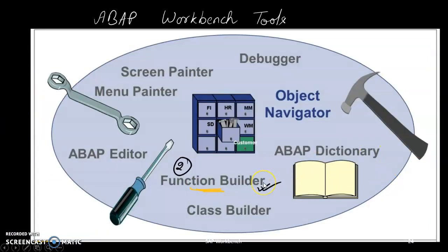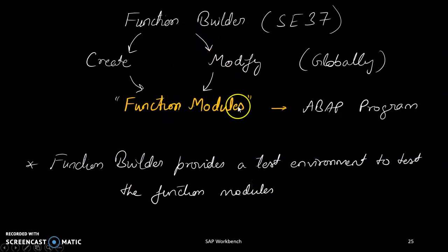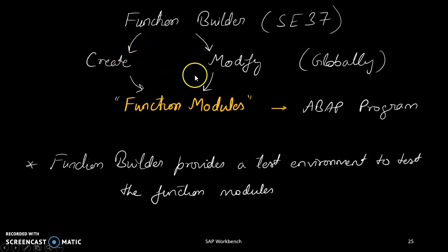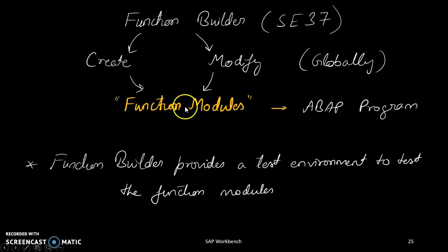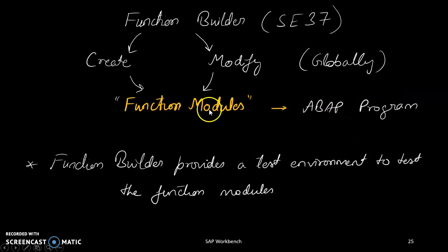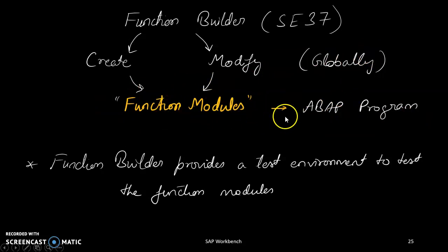The function builder contains many function modules. A function module cannot run on its own. The function builder can create, modify, and test function modules to see how they work. When we call a function module from another program, then we can run it. Function modules are built globally.